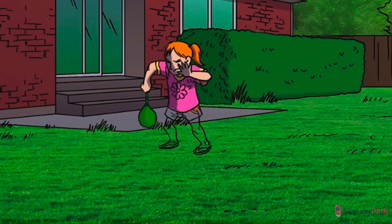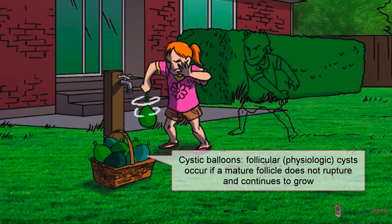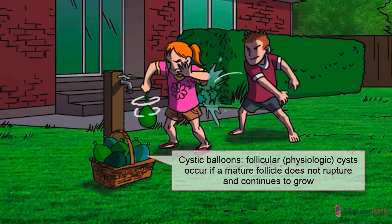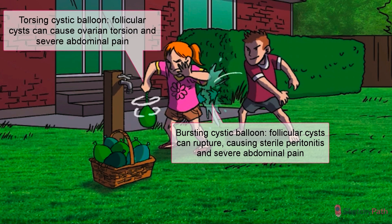It's Easter in the ovary garden — time to fill the ovary baskets with eggs and candy. Follicular cysts are the most common ovarian cyst in reproductive-aged persons with ovaries. They're also called physiologic cysts. They occur if a mature follicle does not rupture but continues to grow, accumulating fluid and resulting in a simple cyst — a harmless water balloon, if you will. These cysts are usually asymptomatic and regress on their own, but if they rupture, they can cause sterile peritonitis and severe pain. Large cysts are also a risk factor for ovarian torsion.